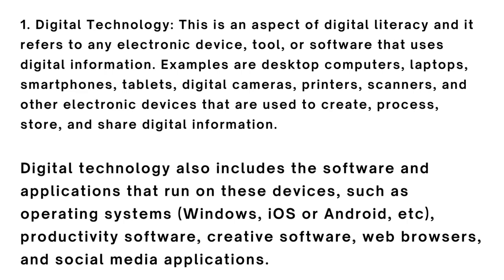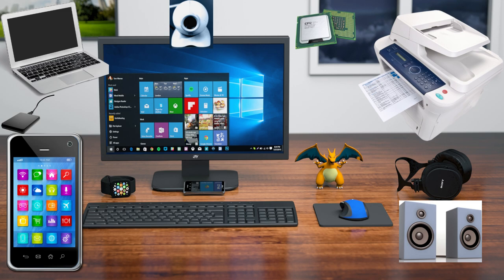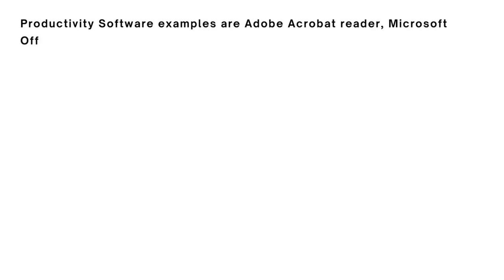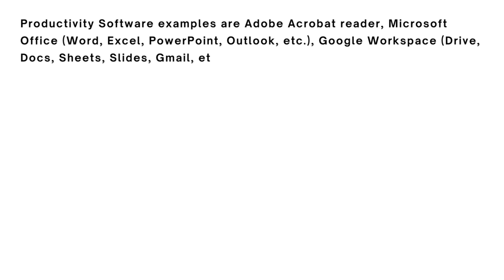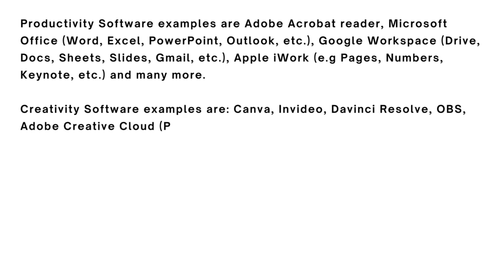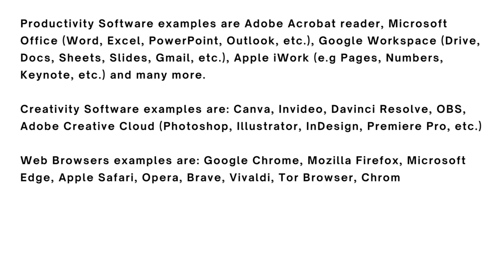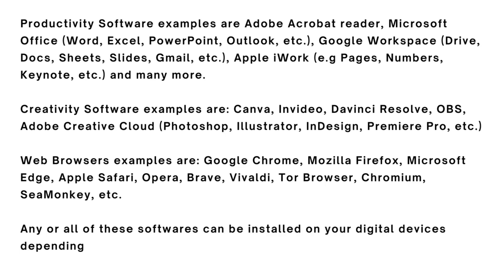Digital technology also includes the software and applications that run on these devices, such as operating systems like Windows, iOS, or Android. Examples of productivity software include Microsoft Office Suite — Word, Excel, PowerPoint, Outlook — and Google Workspace — Google Drive, Google Docs, Google Sheets, Google Slides, Gmail — and Apple iWork — Pages, Numbers, Keynote.